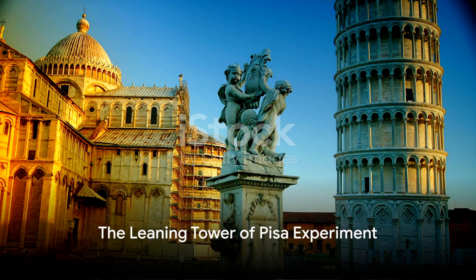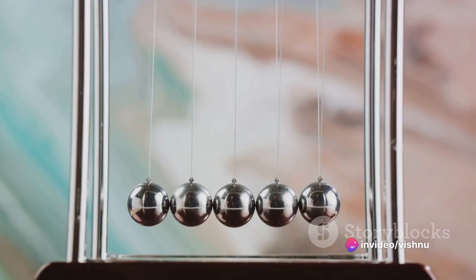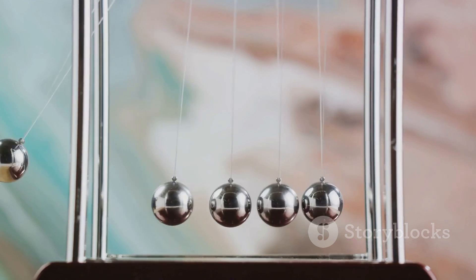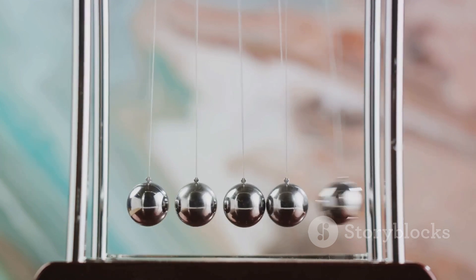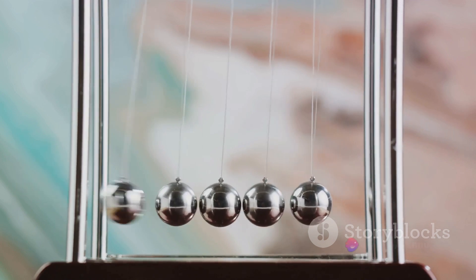Galileo also gained fame by supposedly using the leaning tower of Pisa to prove the law of constant acceleration. It's said that Galileo dropped two steel balls of different masses, but the same material from the leaning tower of Pisa, and they landed at the same time, in contrast to what Aristotle would have predicted.